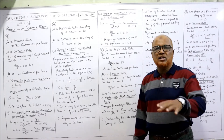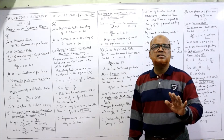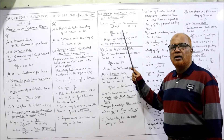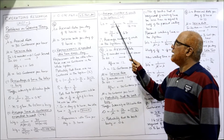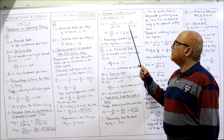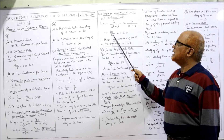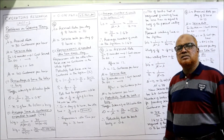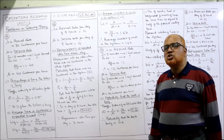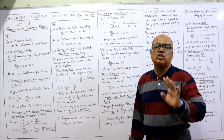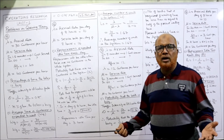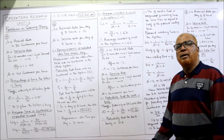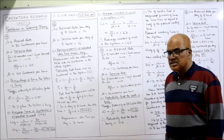The first question is completed — repairman's idle time per day is 3 hours. Second question: average number of units in the whole system. The formula for Ls is lambda divided by (mu minus lambda). Lambda is 10, mu is 16, so Ls = 10 divided by (16 minus 10) = 10/6 = 1.67. One limitation of queuing theory is we may get fractional values for units, which is theoretically acceptable.